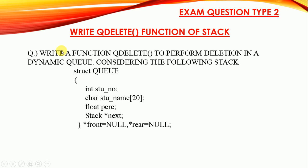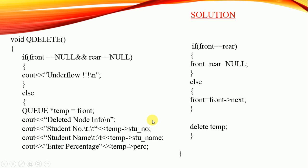Type 2 question: write a QDelete function to perform deletion in a dynamic queue considering the same structure — student number, name, percentage, next — where front and rear are initially pointing to null.